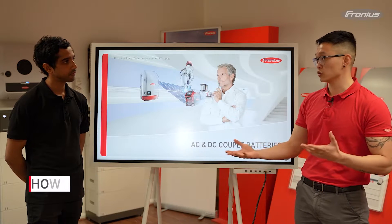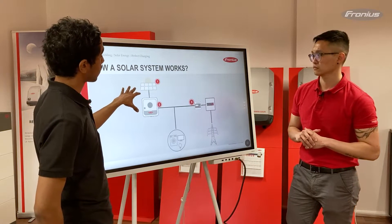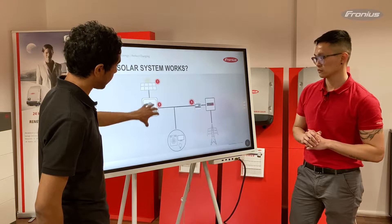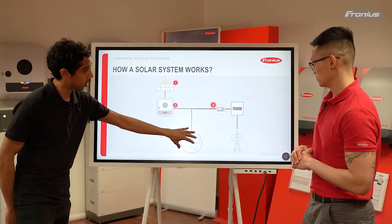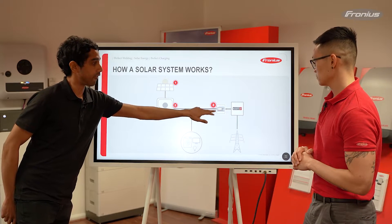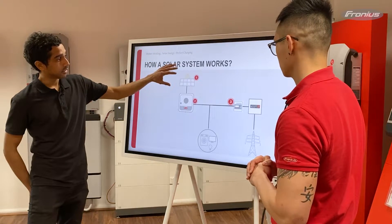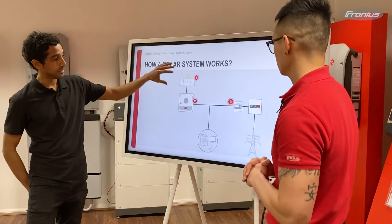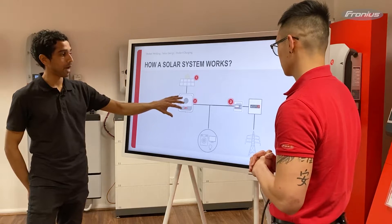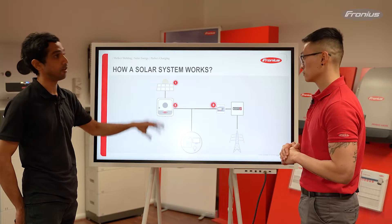Before we talk about the solution, let's see how a solar system works. Here you can see the components of a solar system: you've got your panels up here, your inverter here, your loads here, the grid over there, the utility meter, and then the Fronius smart meter. Sunlight is converted by the panels into DC power, and the inverter will invert or convert that DC power into AC power, which is what comes out of the plug points in your house or business.